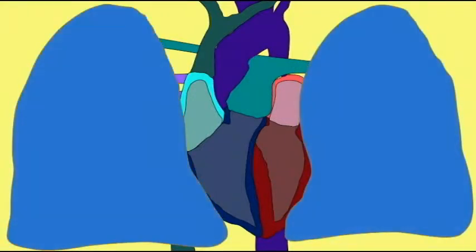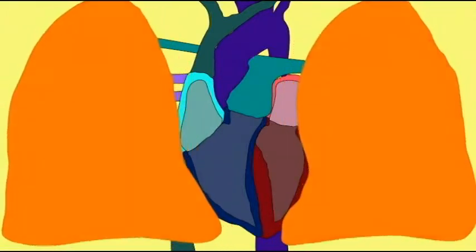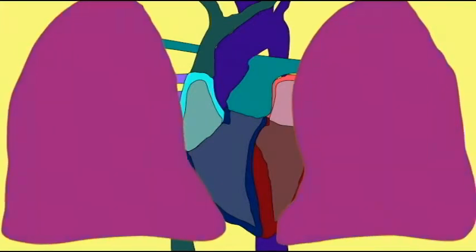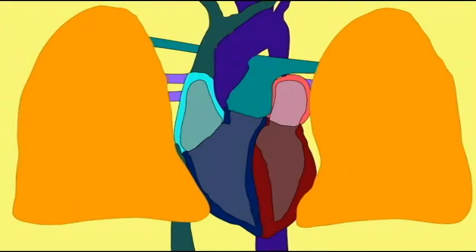This deoxygenated blood will enter into the right atrium of the heart. The right atrium transports blood to the right ventricle, and the right ventricle sends it from the heart. This blood then travels to the lungs, where gas exchange can add oxygen.